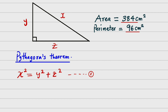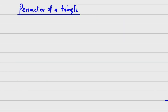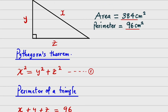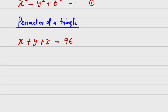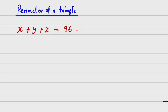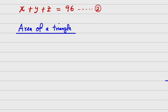The next thing we consider is the perimeter of a triangle. To find the perimeter, we add all the sides: x plus y plus z equals 96. This is our Equation 2.